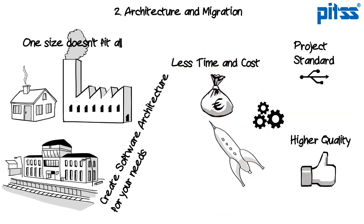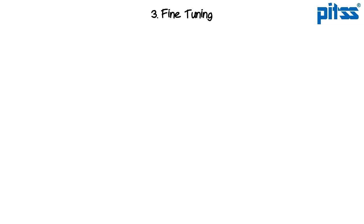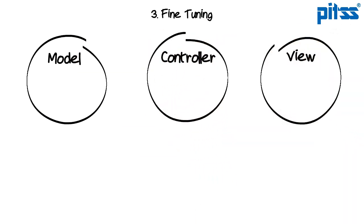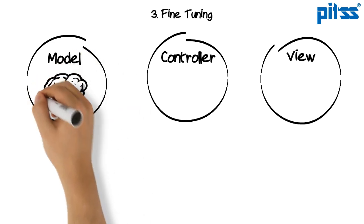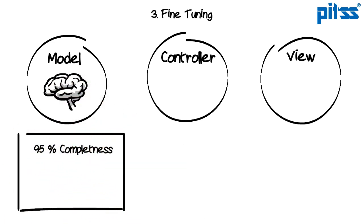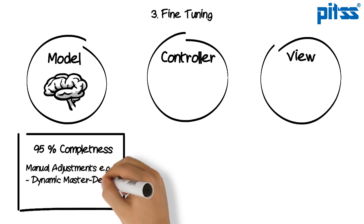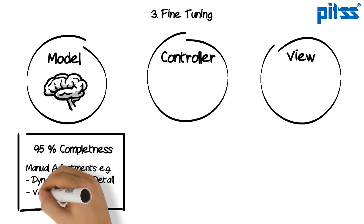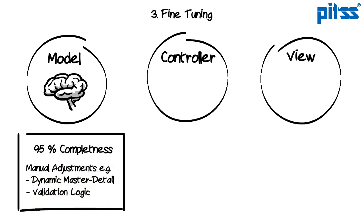Of course, this is not a one-to-one migration because PITSCON only migrates objects that can be migrated as handwritten. This is the reason why a detailed fine-tuning phase is necessary. The PITSCON ADF assistant generates out of the Forms modules the model layer, the view layer, and the controller layer. All layers need more or less manual adjustments to finalize the migrated application. The model layer has up to 95% completeness after the generation. Just some adjustments are needed, for example, the master-detail relations that were controlled in a dynamic way in Oracle Forms. Also, the validation logic must be addressed in this part of the fine-tuning phase.